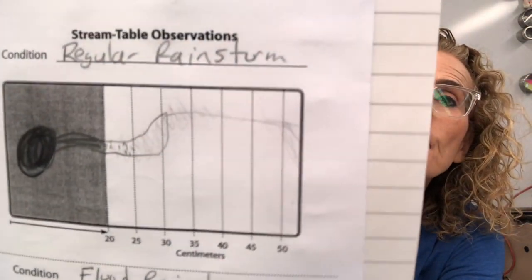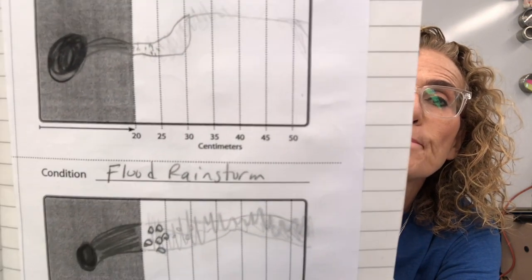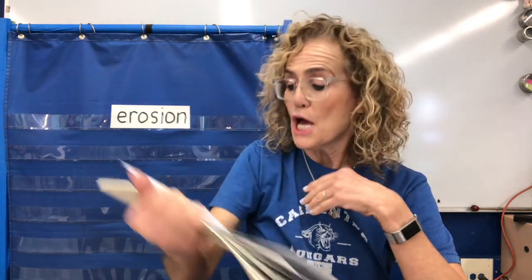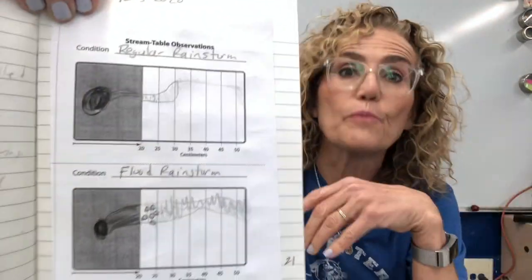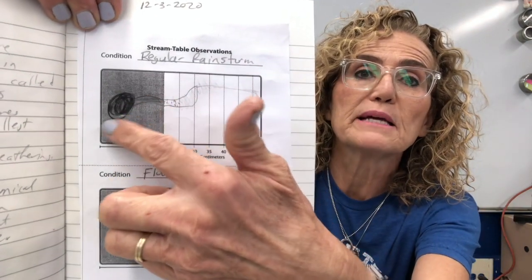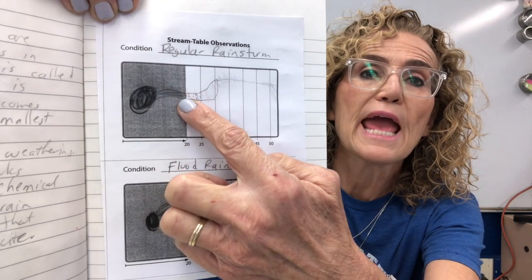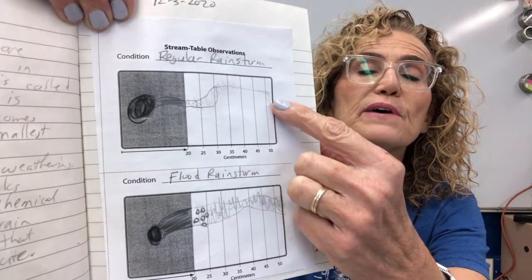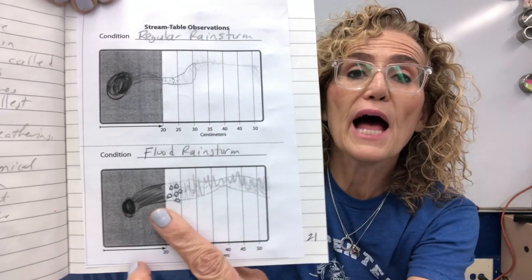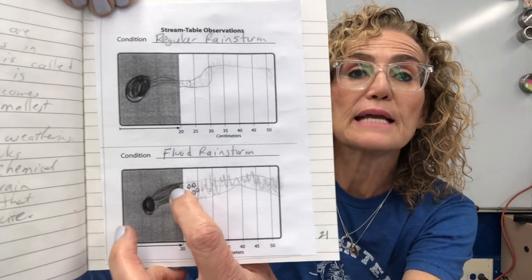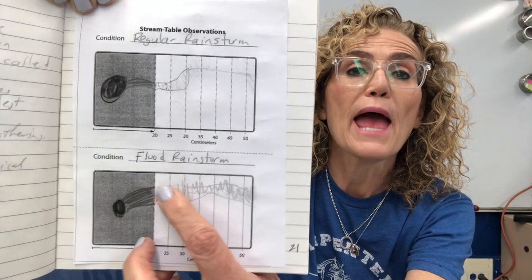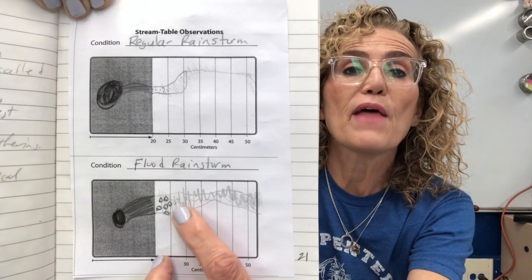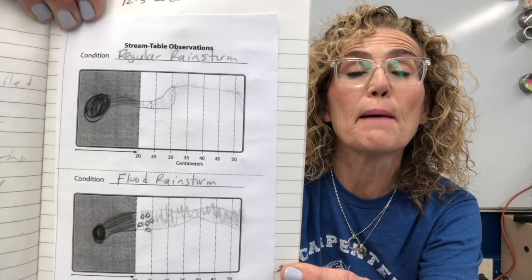Remember I took some measurements showing how far the pebbles went and how far the sand and all the different types of materials went. I'd like you to draw a bird's eye view picture. For the regular rainstorm, there was a nice big lake at the bottom, it cut a small canyon, and carried some gravel and sand, with a little silt and clay farther down. For the flood, there was a very small pool, it cut a deep canyon right away, with large pebbles up to 25 centimeters away, then gravel, and sand and material carried much farther.